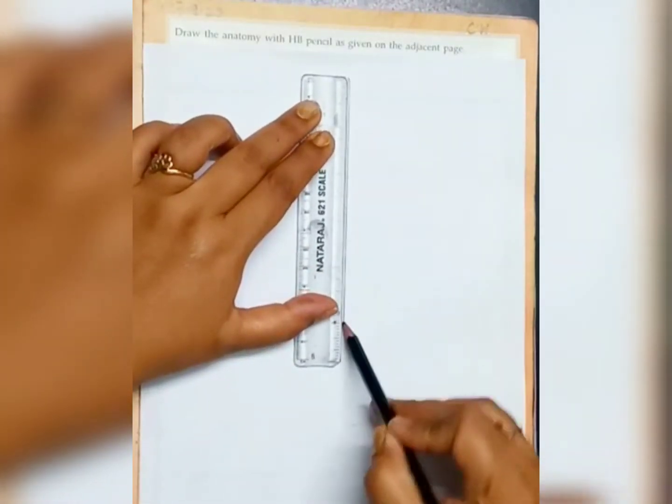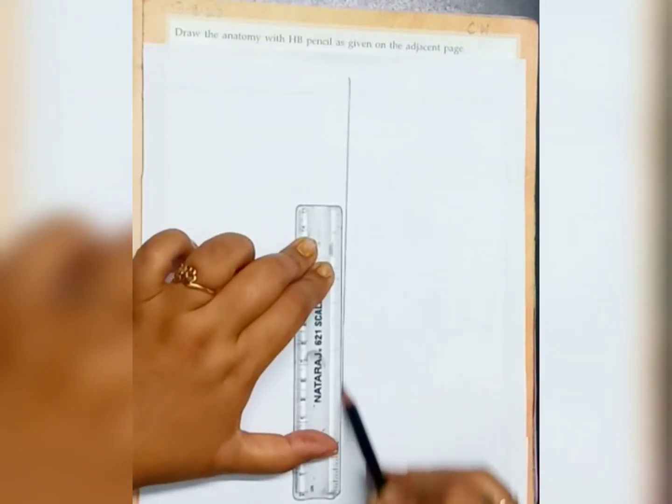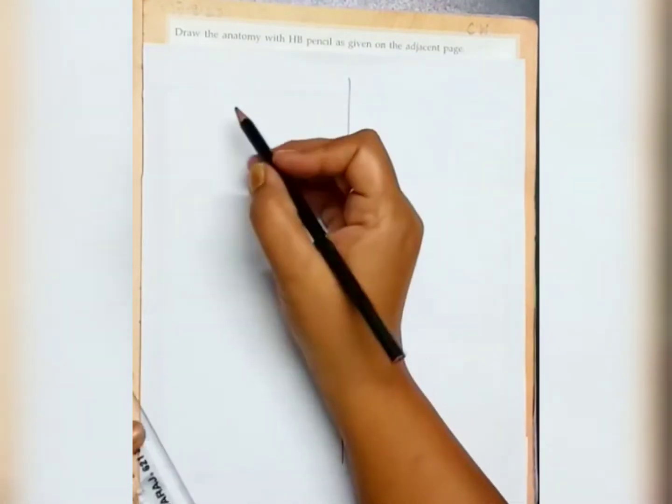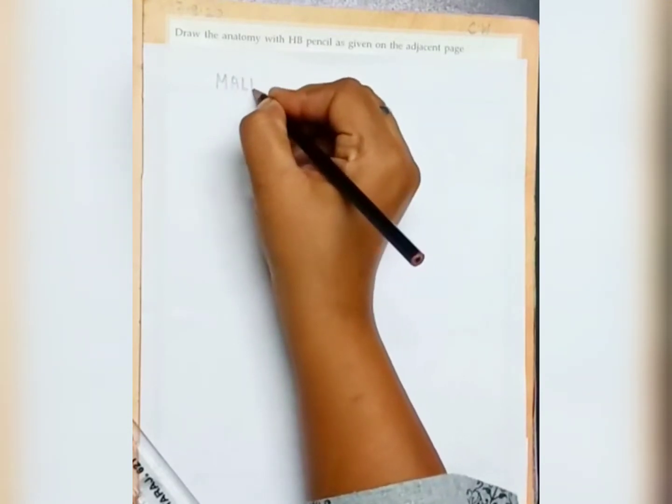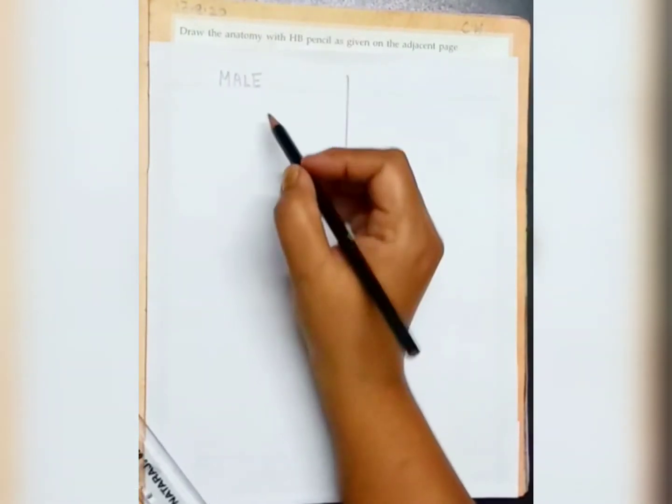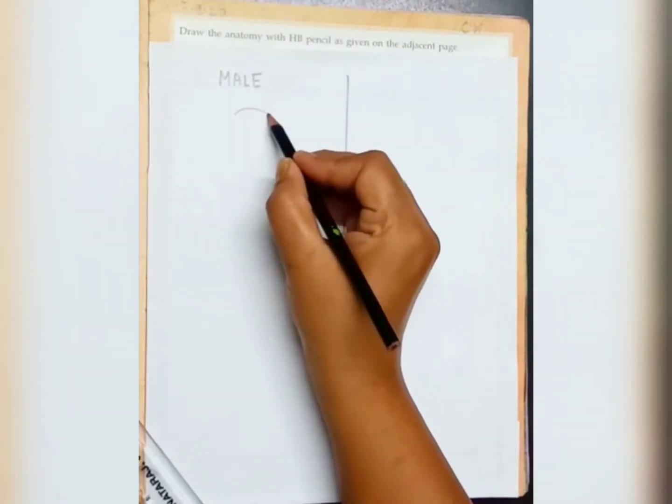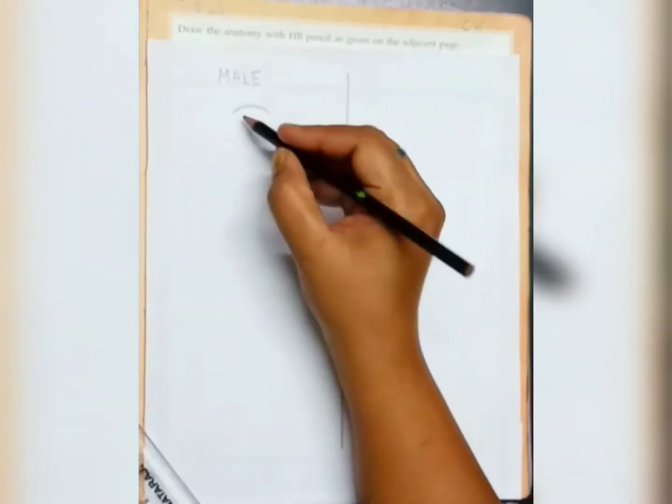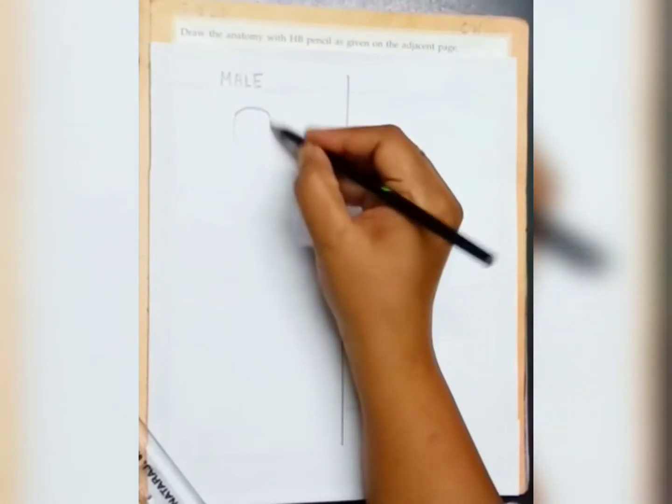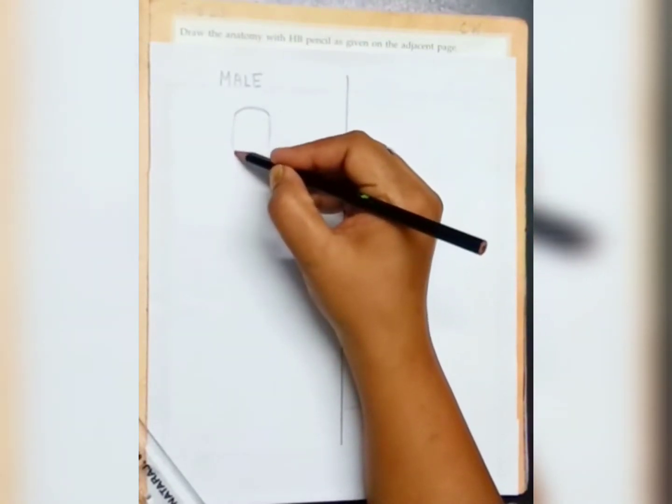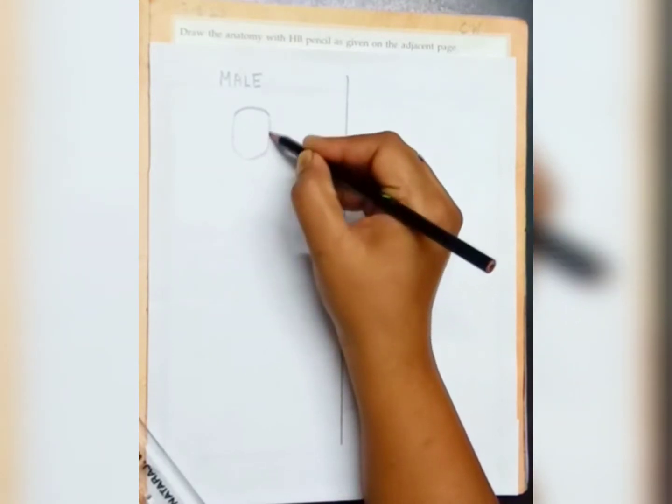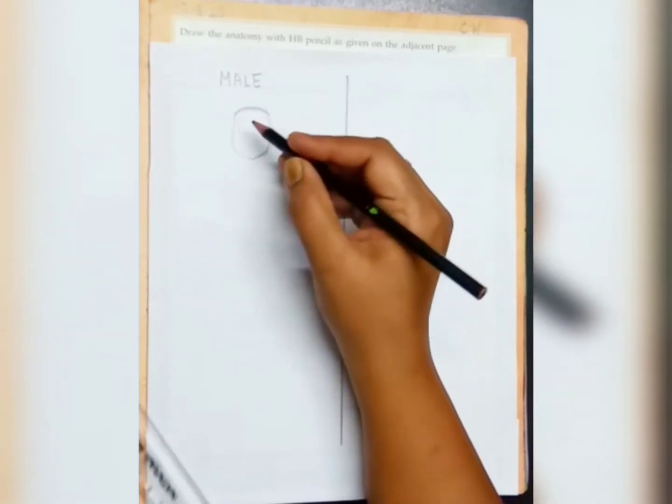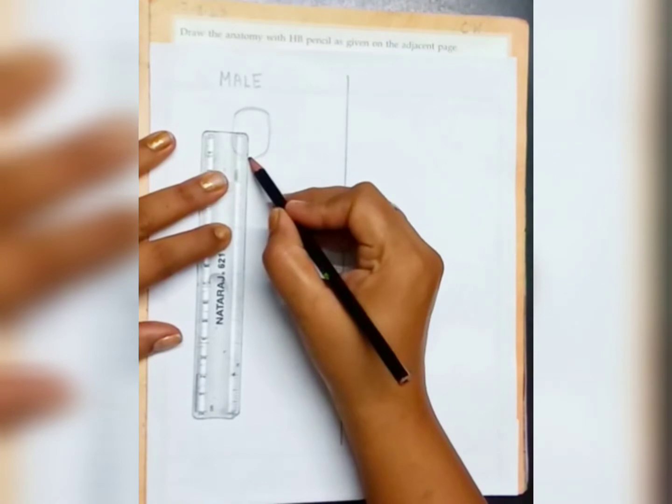First, draw the center line. Then, the male anatomy, write down male. For male anatomy, we will be starting with head. See? Thoda sa upar se oval. Then, neck portion. You can use scale.